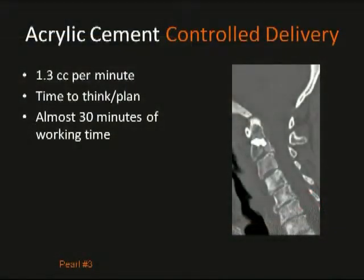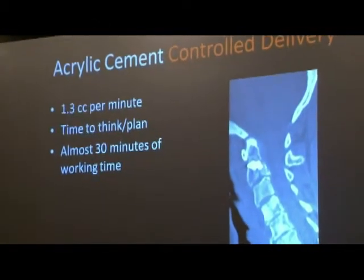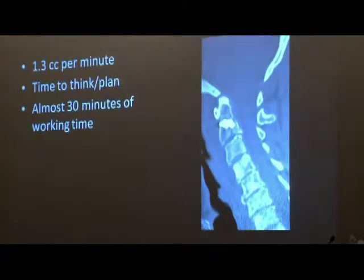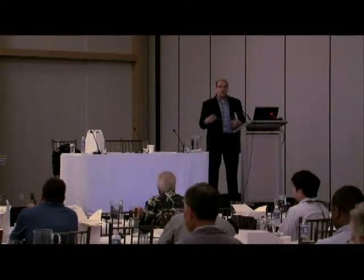Pearl number three is controlled delivery. You have to understand what devices are out there to perform certain cases with more confidence. The Define device lets you push a button and deliver a controlled amount of cement over time, allowing you to think it through — did I deliver enough? Should I wait a little longer? There are advantages to not rushing the cement in. Dr. Daramond used a fast simplex cement in his first case, which was very difficult to control. Using thicker cements in a controlled fashion makes it easier, like gluing an AVM versus using Onyx.